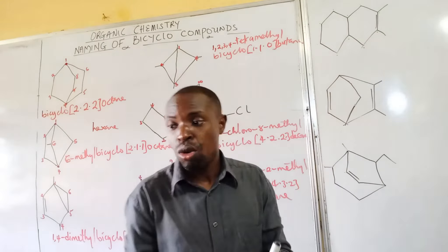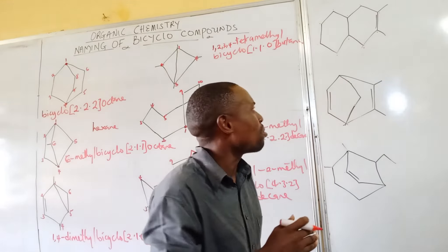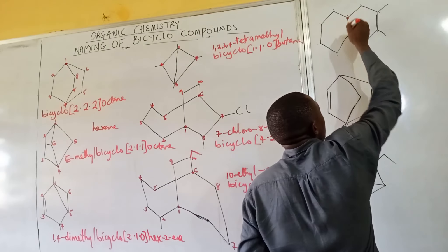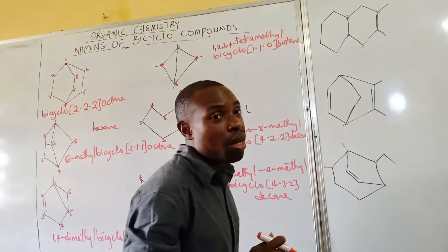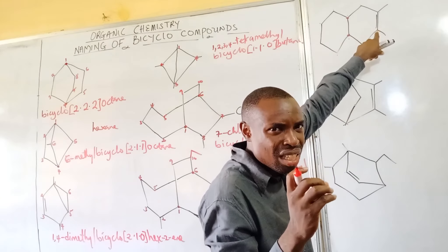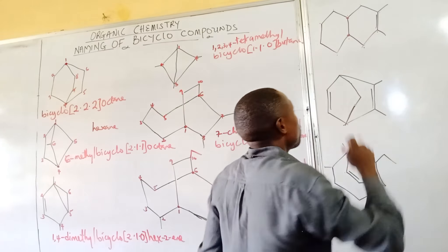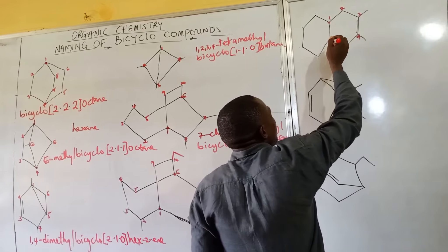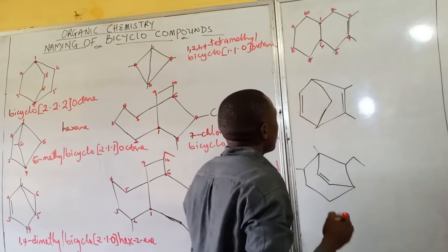Moving to this next compound: both sides are equal — one, two, three, four on each side. The bridgehead is just these two positions. Since both sides are equal, we fall back to the substituents. This compound has a functional group which is an alkyne, so I start numbering from the side with the functional group: one, two, three, four, five, six, seven, eight, nine, ten. It is a decane-based compound.